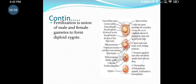You can see how the sperm enters into the egg, and after entering, the male and female pronuclei unite. The union of male and female pronuclei gives rise to the zygote, so that zygote is diploid.